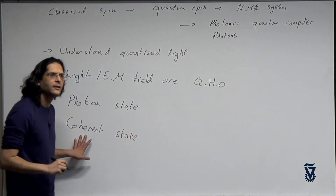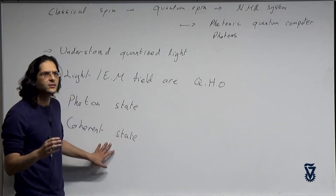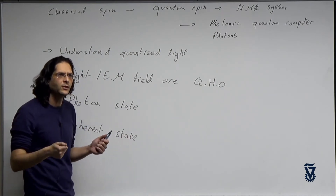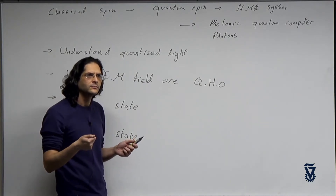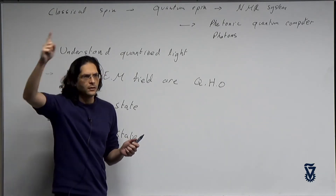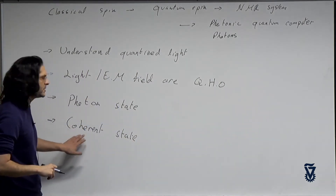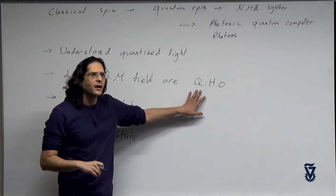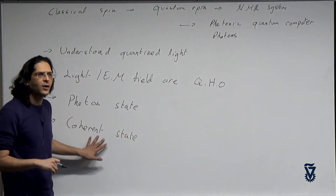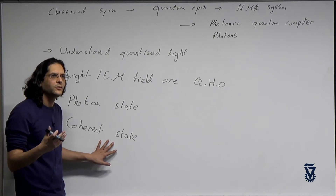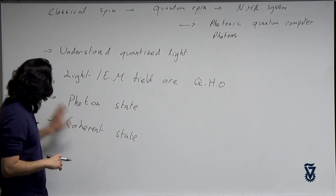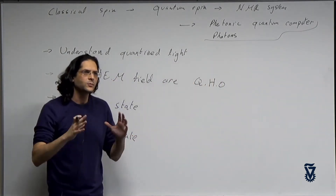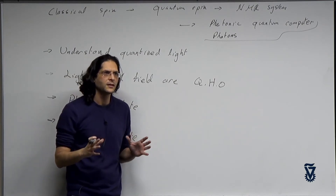A coherent state is just a classical state — it's basically what is described by a sine wave. If you take an electromagnetic field and classically drive it, take a voltage and output it as a sine wave, you will get a coherent state. We will see the quantum description of a coherent state as a quantum harmonic oscillator and understand its importance in the context of quantum computation. This is our next chapter.